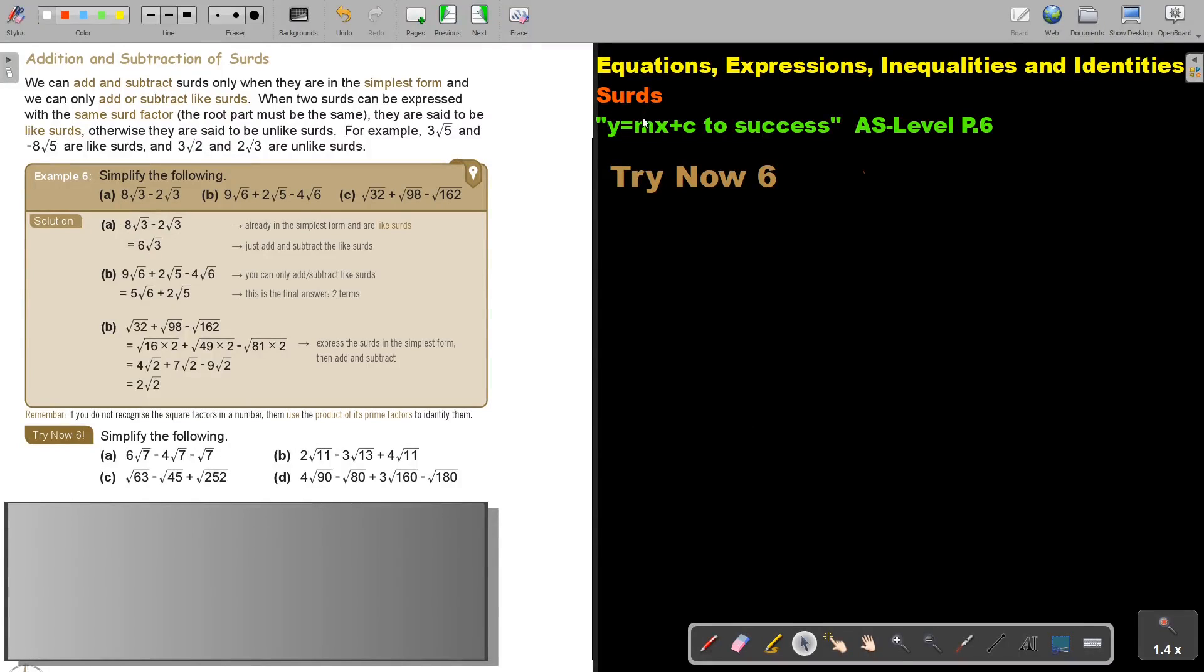In this video, we are going to continue with surds. You will find this on page 6 in the Namibia AS Level Mathematics textbook Y equals MX plus C to success. In this video, we are going to focus on addition and subtraction of surds.